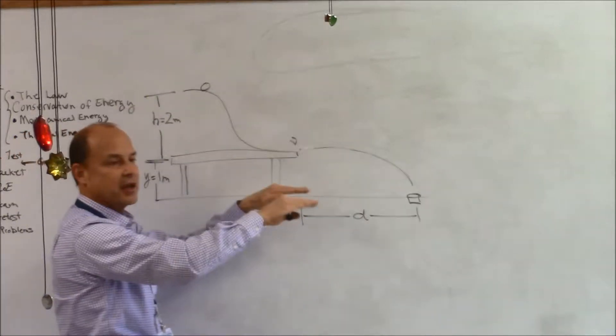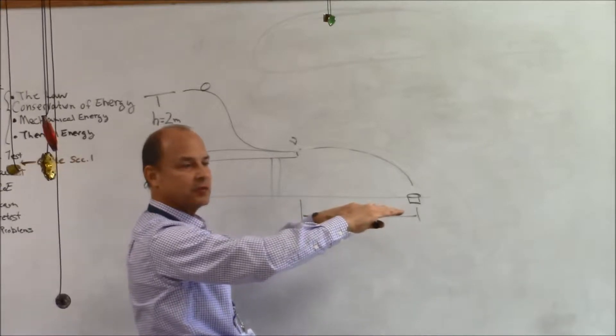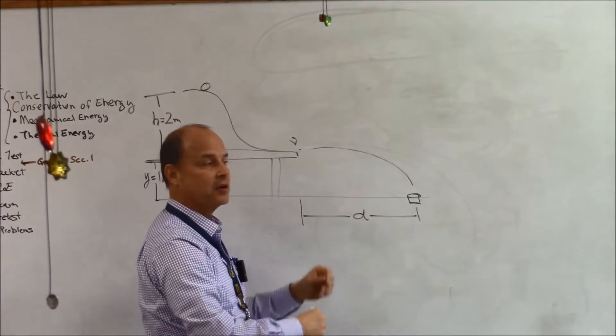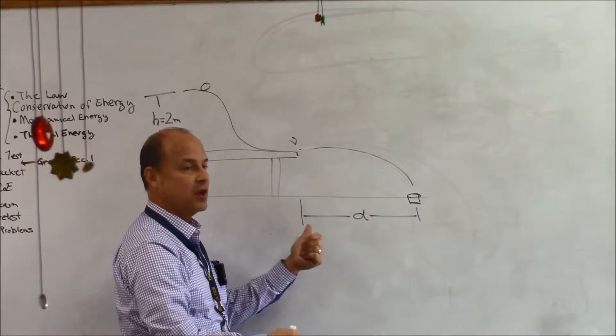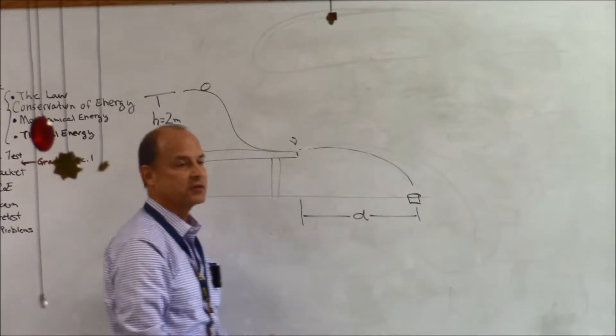All that gravitational energy is going to be converted into kinetic energy, the energy of motion, when it goes flying off the table. When it goes flying off the table it's going to be going at a certain speed which you can figure out from its kinetic energy.